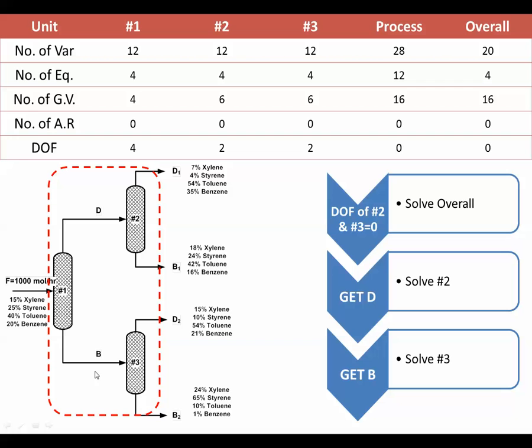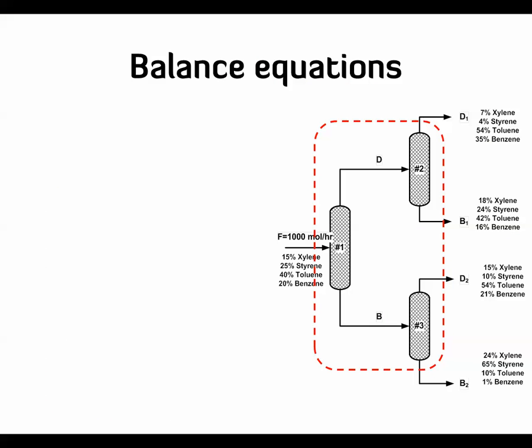Today we will see how we can do these calculations using Excel and how this can save us a lot of time. The first thing we need to do is set up the balance equations. It's pretty simple — we look at what is coming in through these four streams and we do it for the four components that we have: xylene,